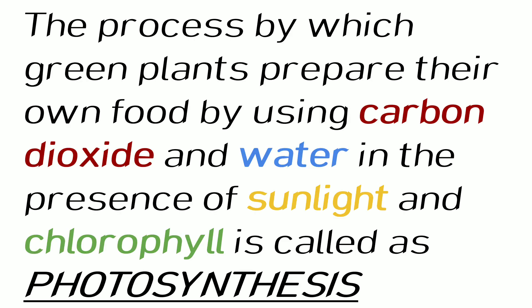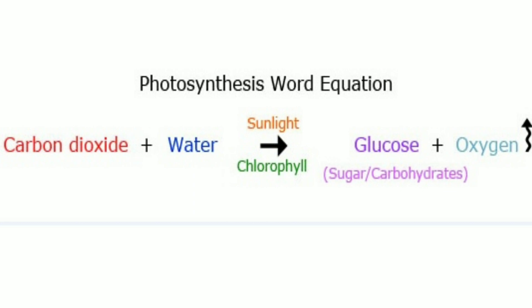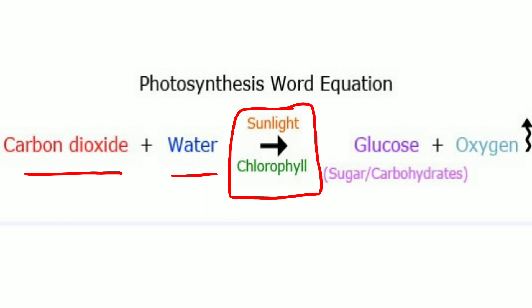Let us define photosynthesis properly. The process by which green plants prepare their own food by using carbon dioxide and water in the presence of sunlight and chlorophyll is called photosynthesis. This is the word equation of photosynthesis: carbon dioxide and water, in the presence of sunlight and chlorophyll, gives glucose — which may be sugar or carbohydrates — and oxygen gas is released, as indicated by the upward arrow.